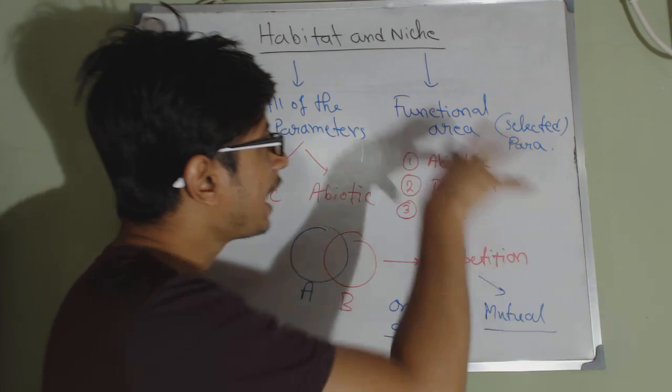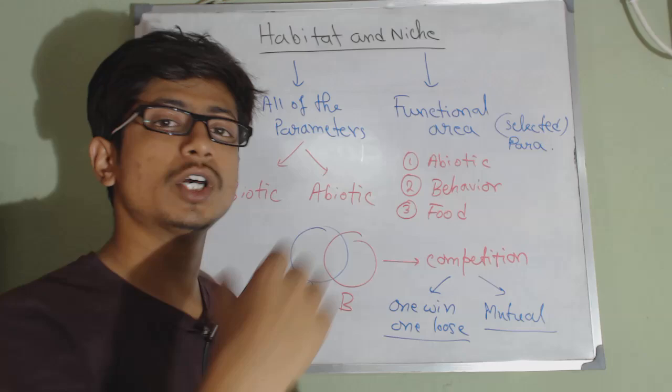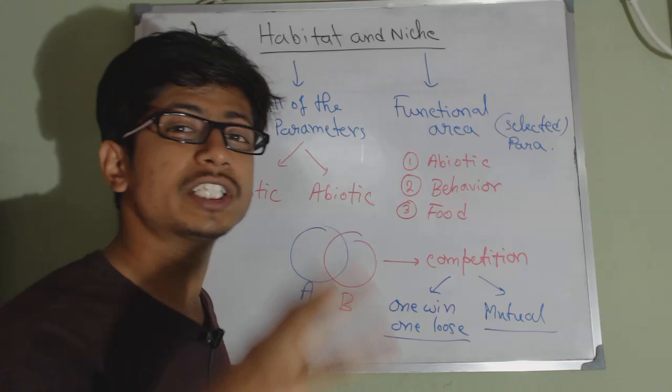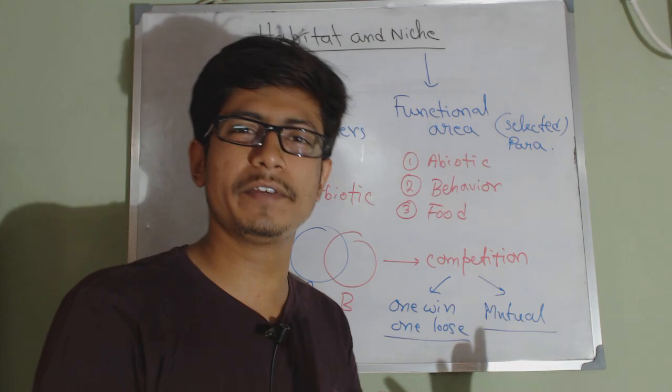The niche includes abiotic factors, behavior of the organism, and the food source — the food nature of the organism. All these things together we call the functional area, the ecological niche of that organism.